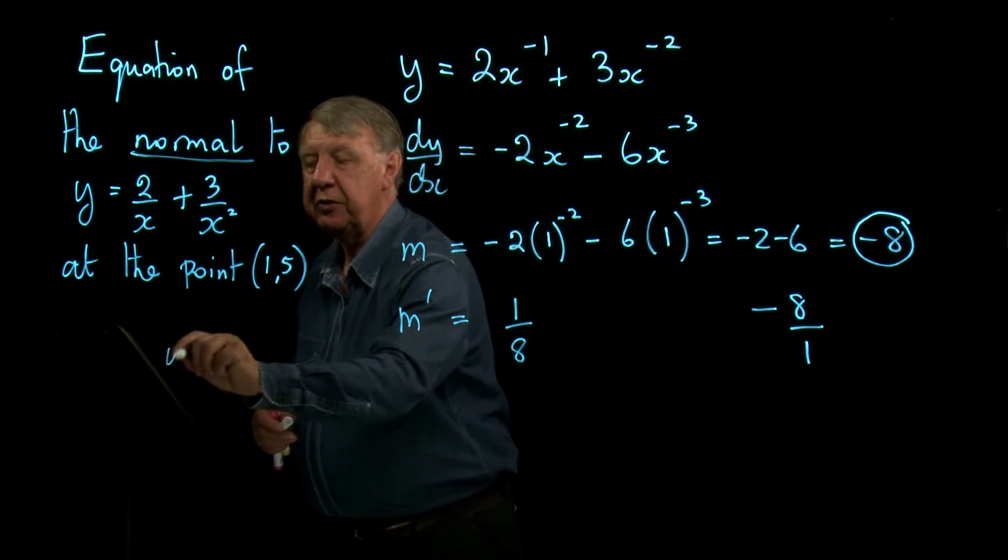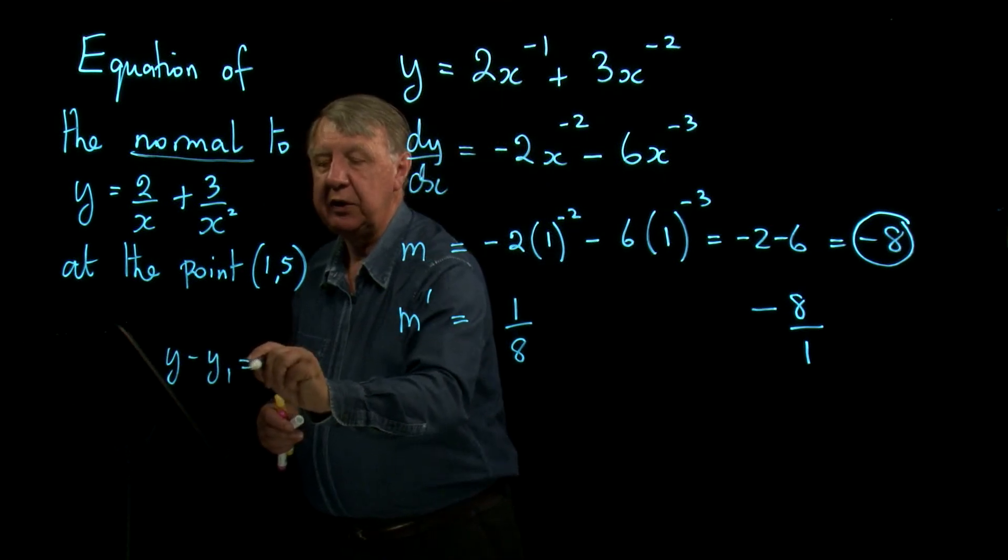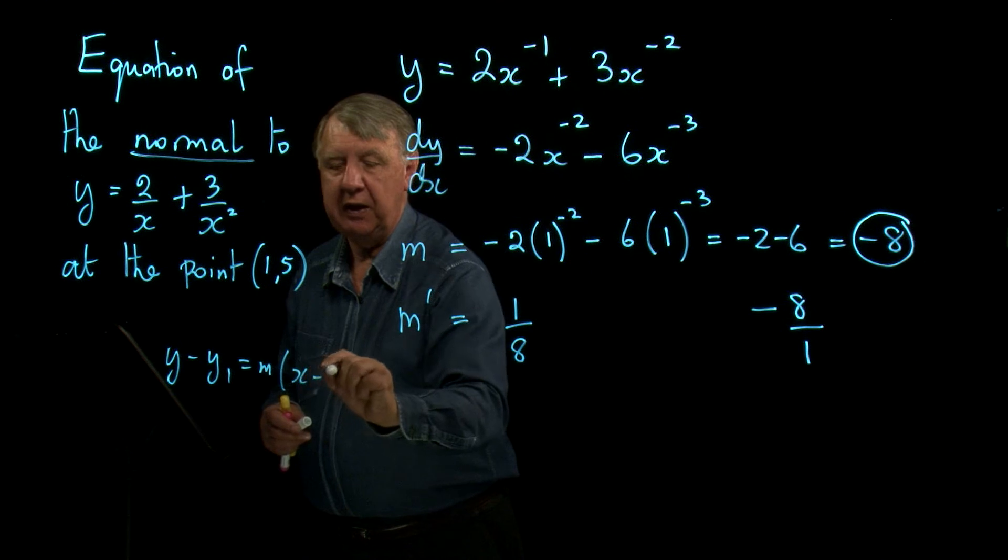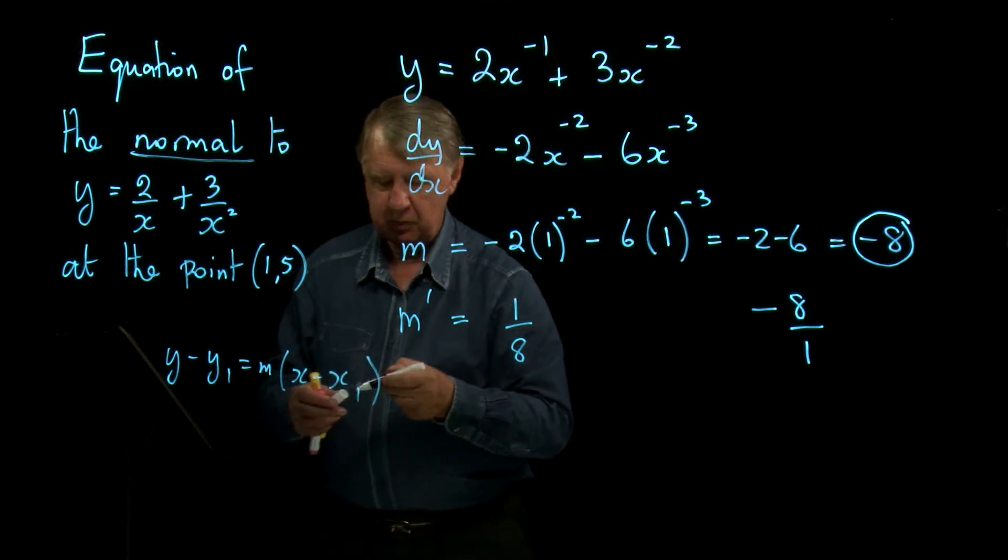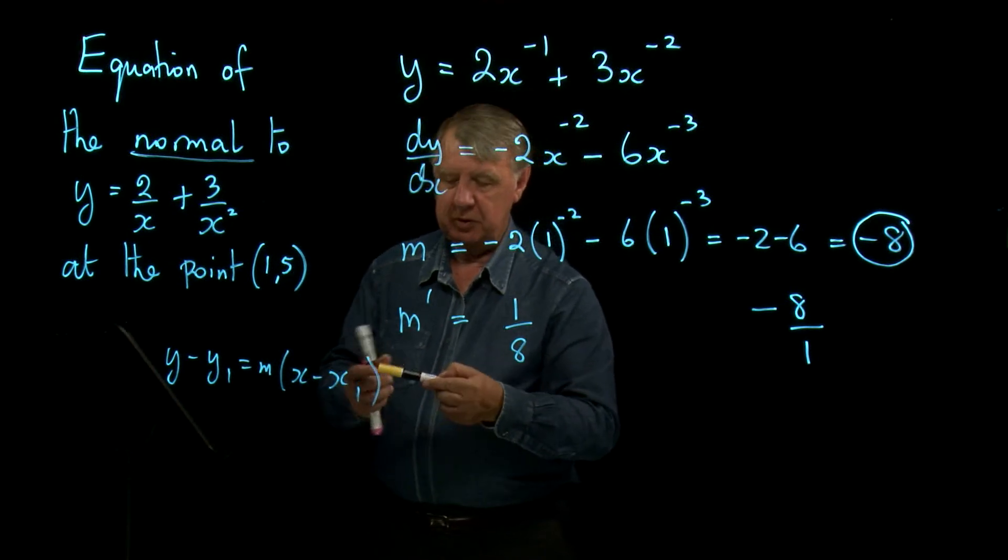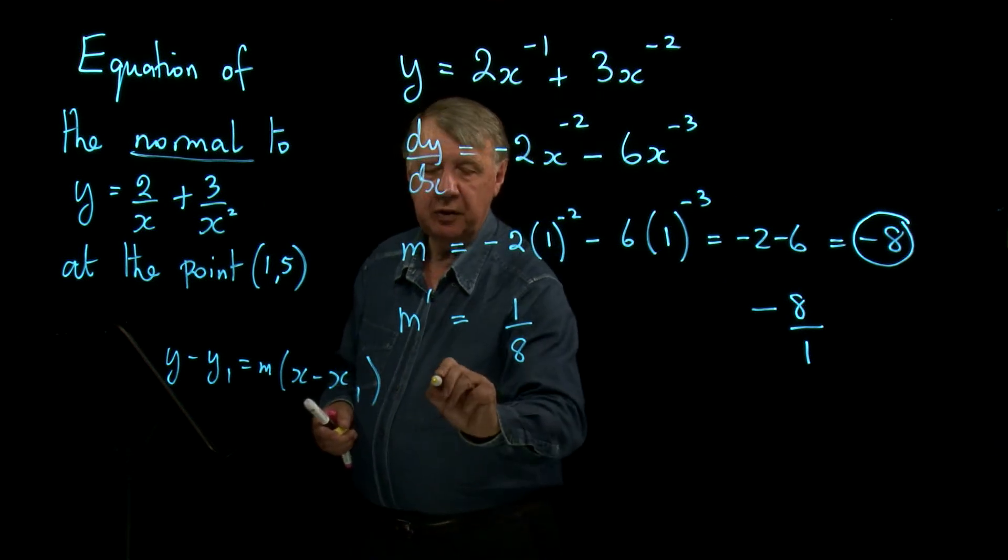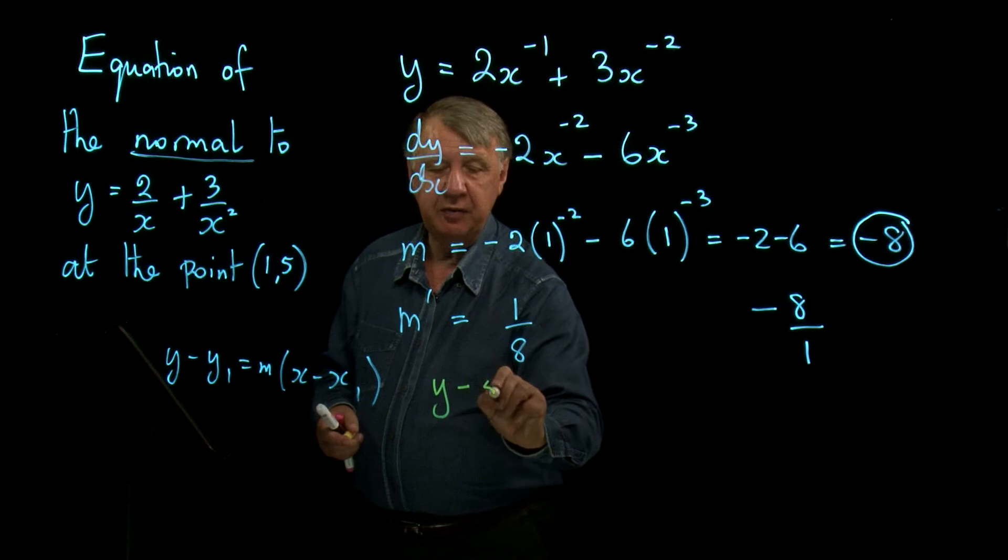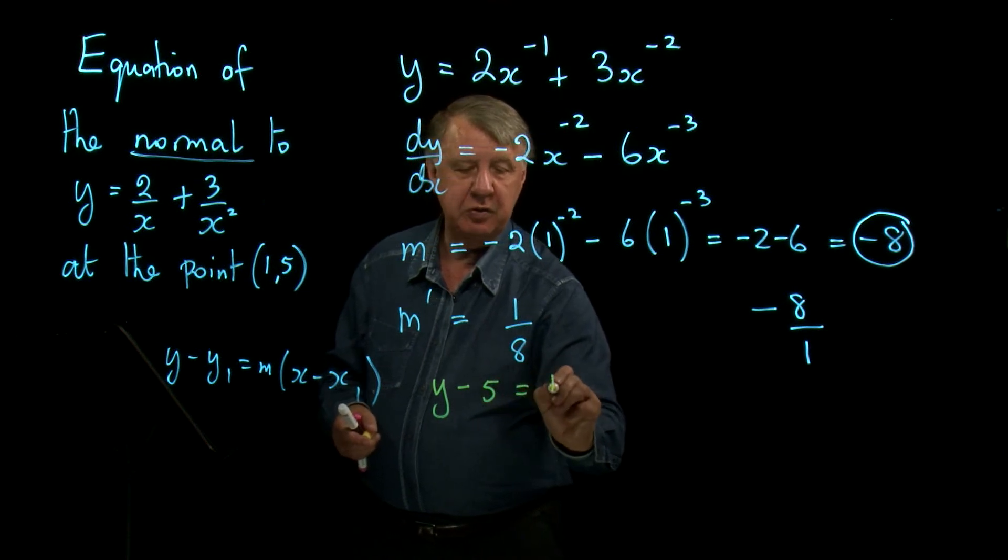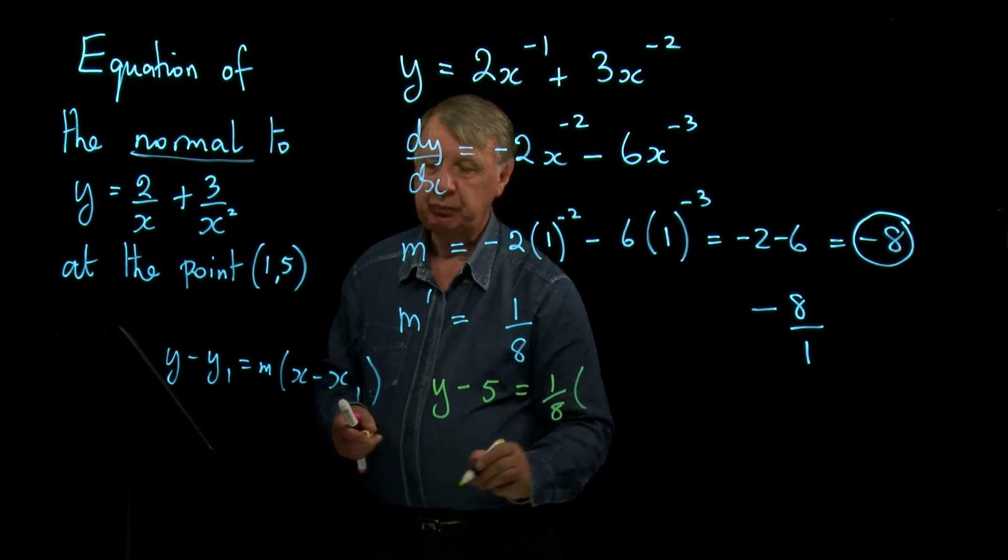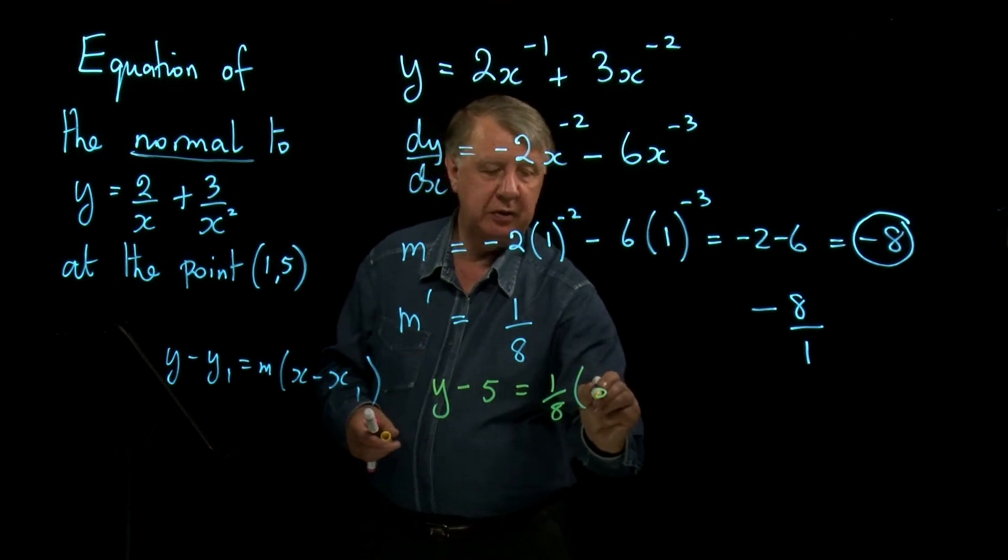I can now use the y minus y1 equals m x minus x1. Let's do this in a different colour just to highlight the answer this time. So it's y take away 5 equals 1 over 8 x take away 1.